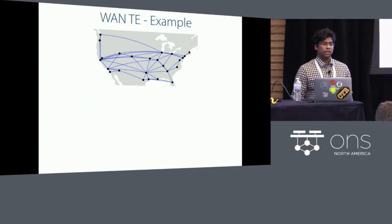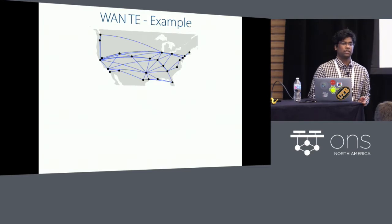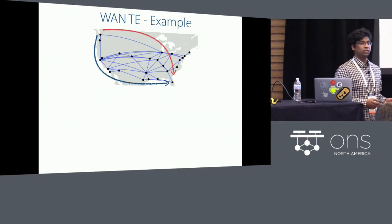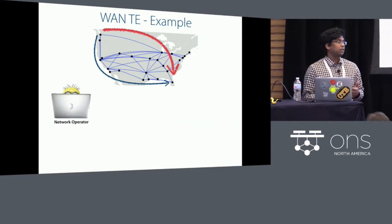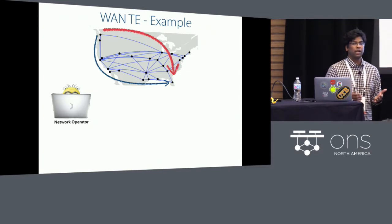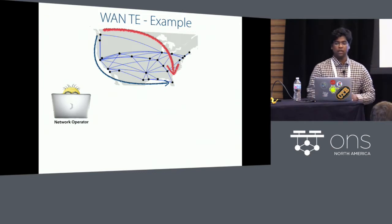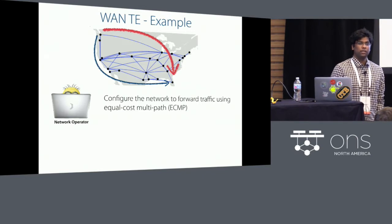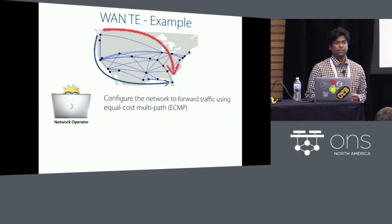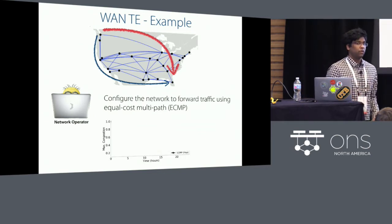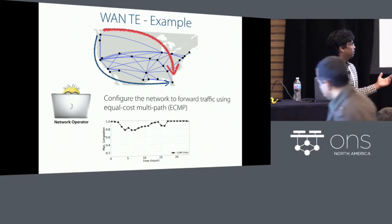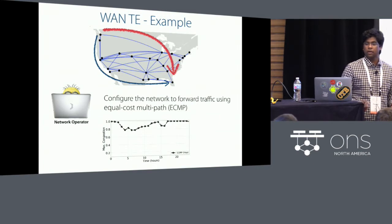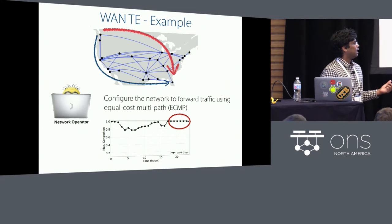Let's start with an example of a wide area network and traffic engineering in such a network. A traffic engineering system has to perform two tasks: first, it has to decide which set of paths to take from a source to a destination, and second, how the traffic should be load balanced among these paths. Assume you, as the network operator, want to measure and improve performance. With ECMP — equal cost multipath — traffic is split equally across multiple shortest paths. You can monitor performance by looking at maximum link utilization, and ECMP performs reasonably well when demands are low. But during peak periods, some links become saturated and traffic is dropped.